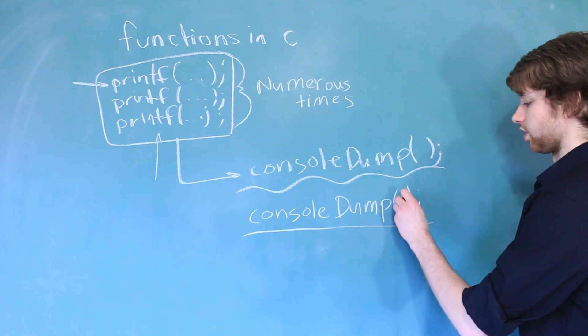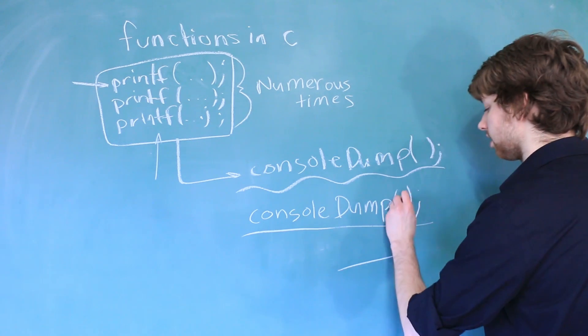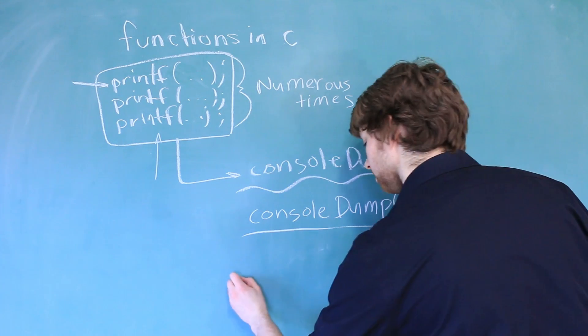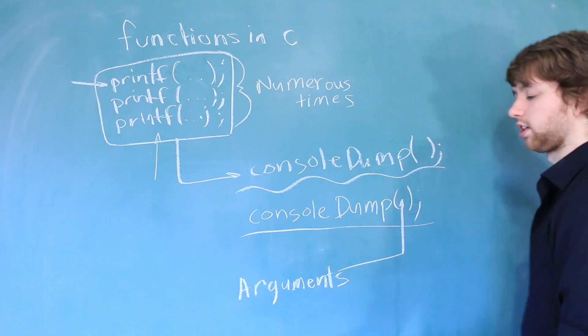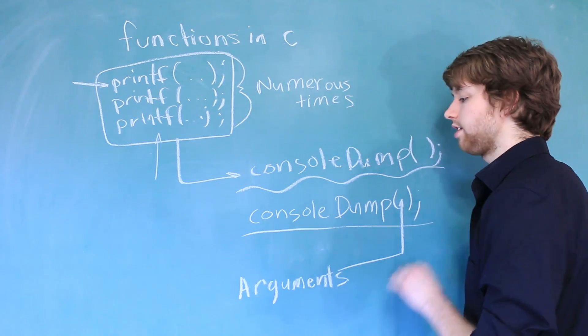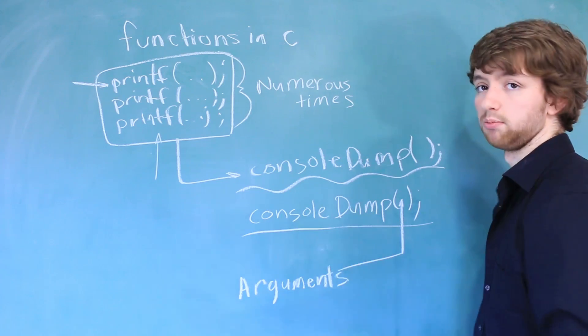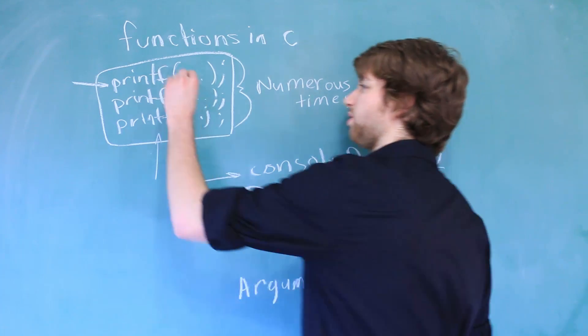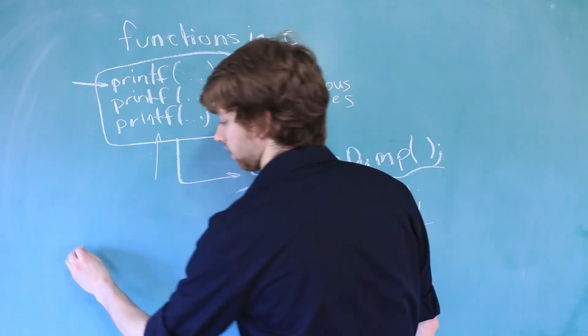The data that we actually pass into a function inside of these parentheses, these are known as arguments. Functions can accept as many arguments as they want. The only thing is you have to separate multiple arguments by commas. So for example, in this printf function, we could do something like this.